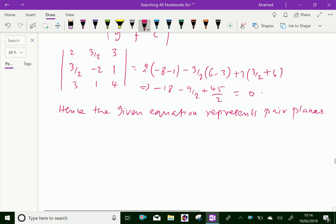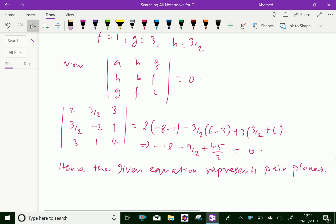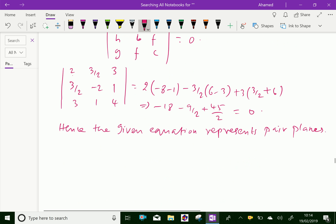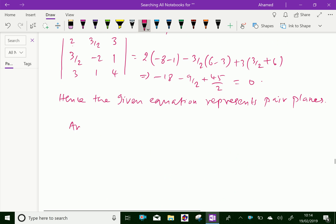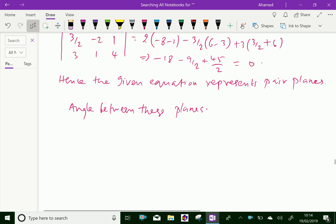Now, you can find the angle between the planes. Angle between these planes: Let θ = tan⁻¹. First, we will write the angle equation.